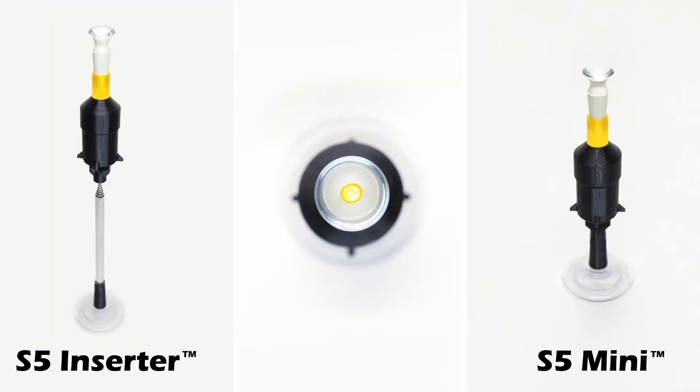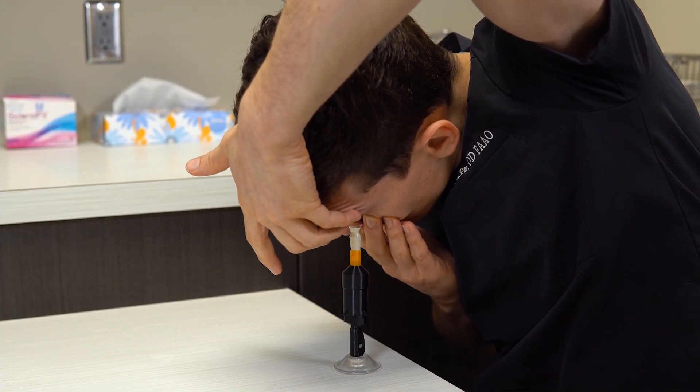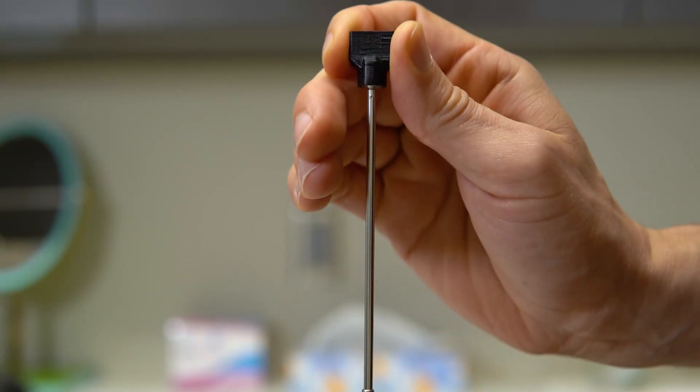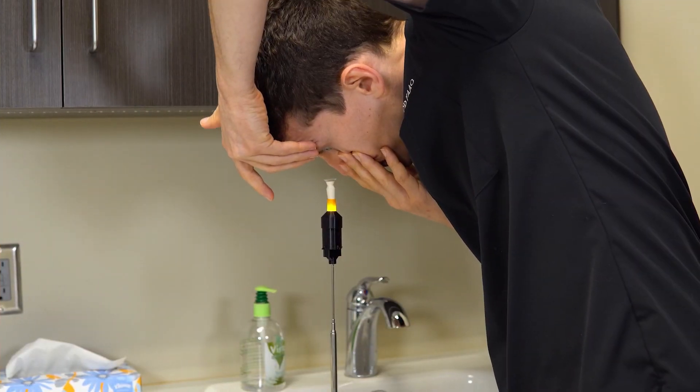The system comes in two versions: the S5 inserter and the S5 mini. The S5 mini features a compact design which is optimized for inserting the lens while sitting down, whereas the S5 inserter features an adjustable arm which is optimized for insertion of the lens while standing. Let's take a look at how to insert a scleral lens while using the S5 system.